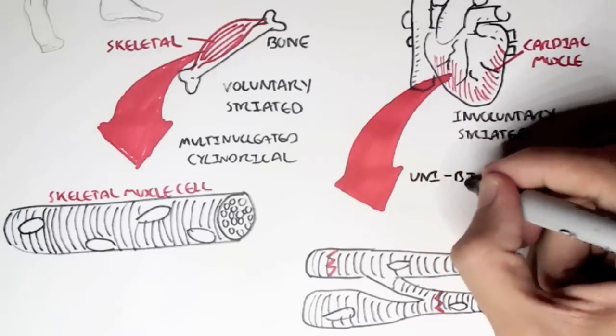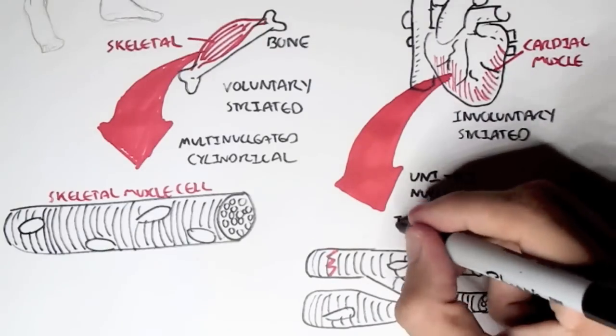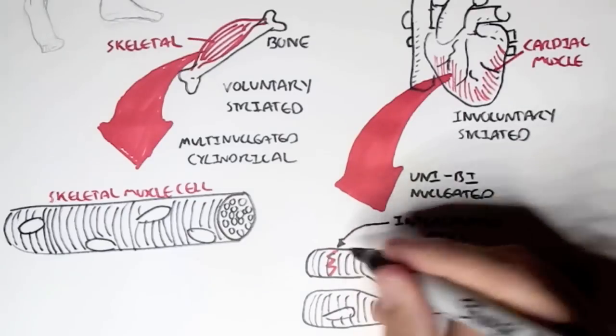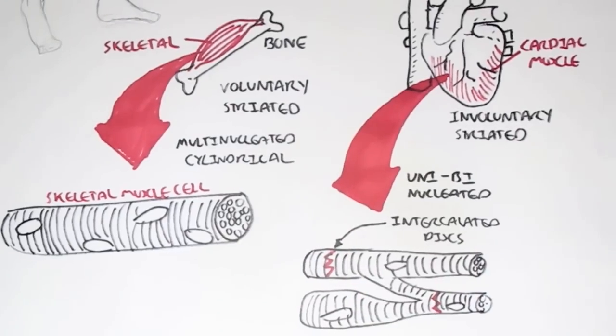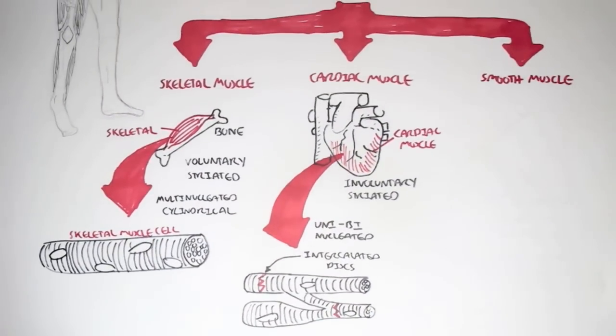Cardiac muscle cells are either uninucleated or binucleated in that they have one or two nucleuses per cell. Each muscle cell is separated by what's called intercalated discs, which help combine each cardiac muscle cell as well as assisting in transmitting nerve impulses throughout the heart during contraction.